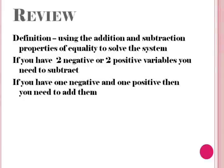To summarize: we use properties of equality to solve the system. If you have two negative or two positive variables, you need to subtract. And if you have one negative and one positive variable, then you need to add them together.